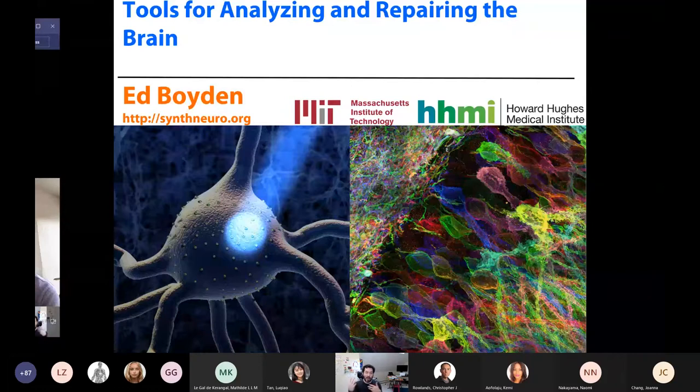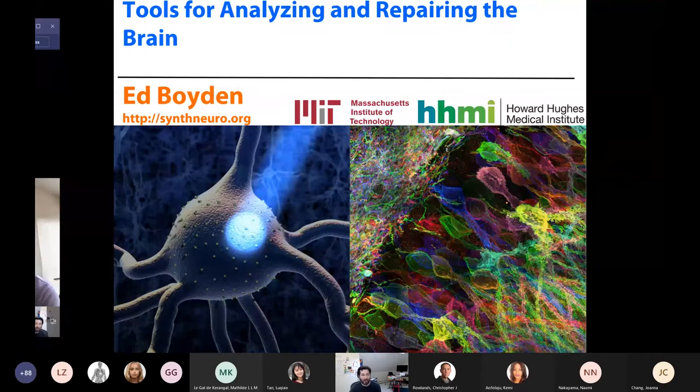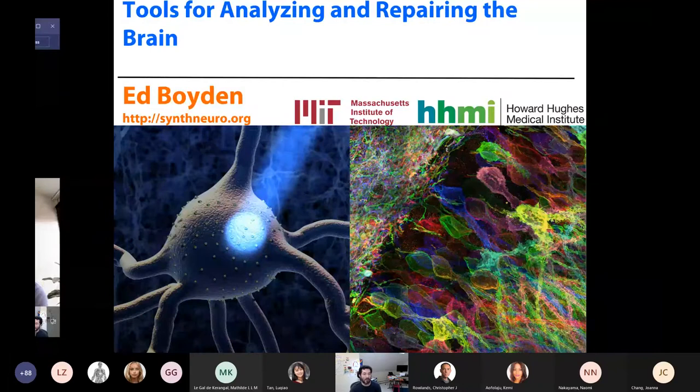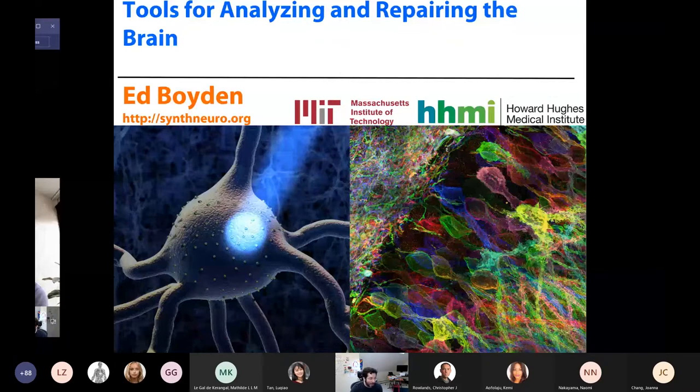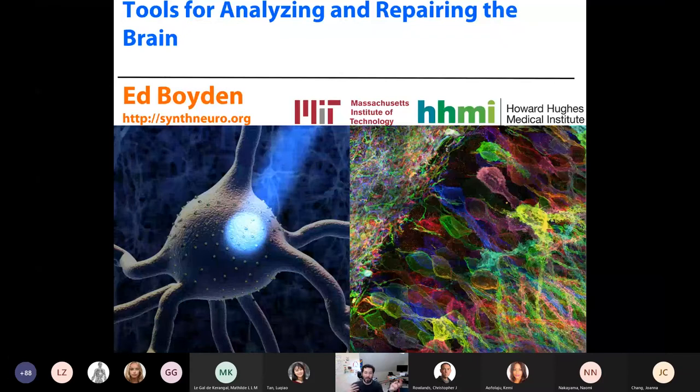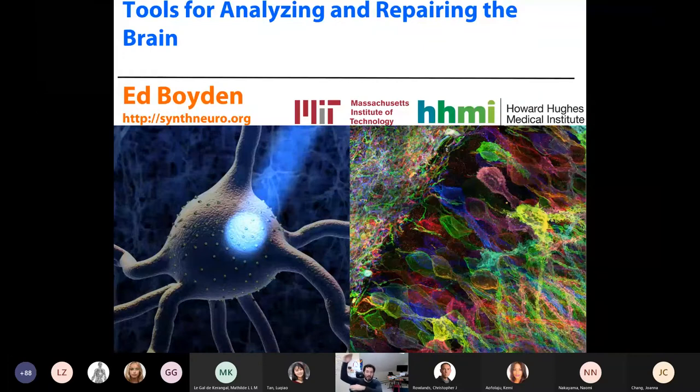So again, if you care about learning and memory, or the progression of Alzheimer's disease, or the spread of a cancer, or how the immune system changes over days to months to years, these are long-term changes. And yet, the physiological events that make the brain and the rest of the body do what it does, those are very brief. And in the brain, we have millisecond timescale changes in electrical potential. And throughout the body, we have all sorts of messengers that communicate and compute over timescales of milliseconds to seconds.